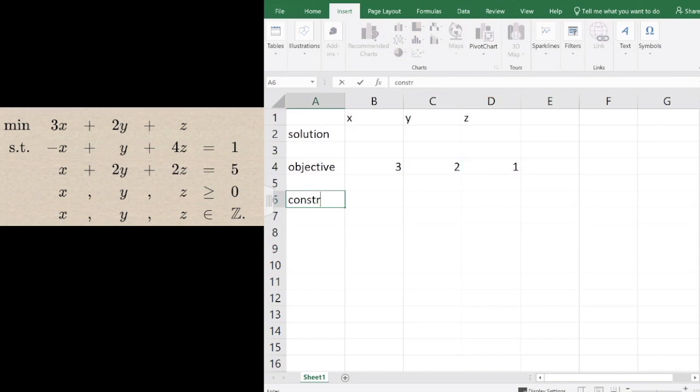The first constraint is negative x plus y plus 4z equal to 1. The second constraint is x plus 2y plus 2z equal to 5.